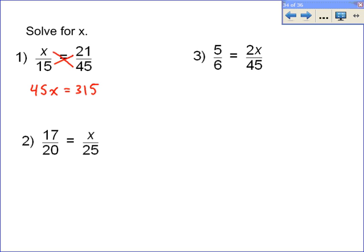And then we know they are equal because the property says the cross products, 45x and 315, are equal to each other.